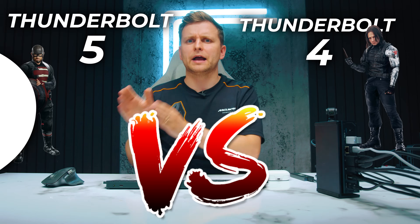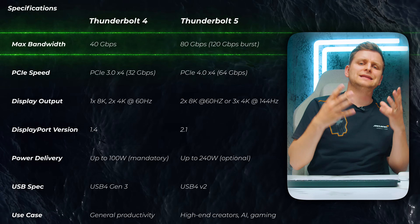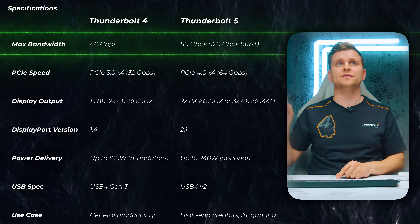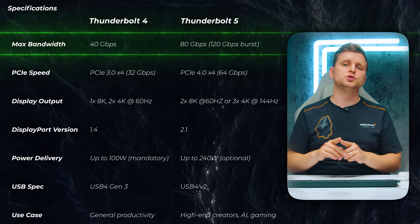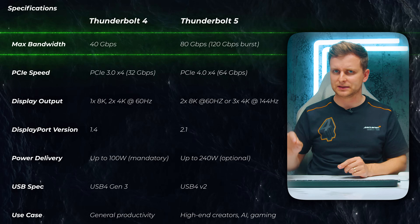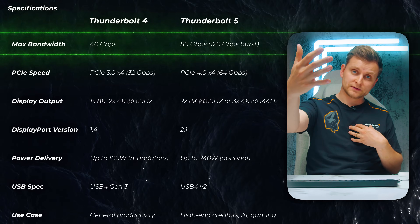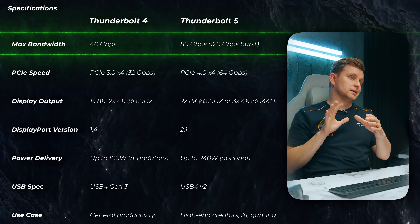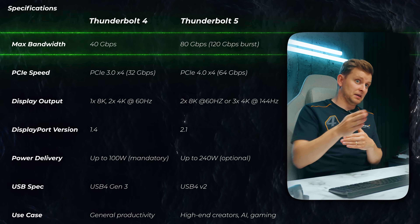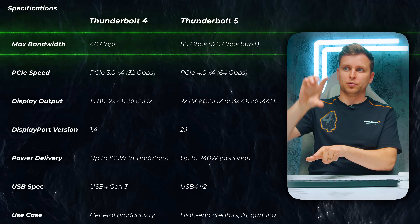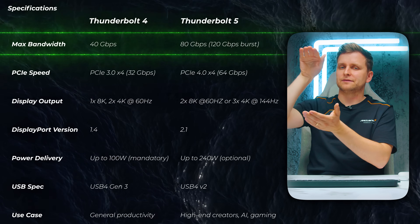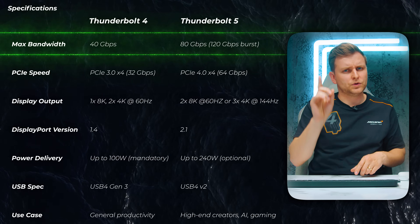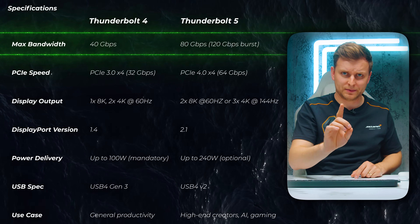Thunderbolt 4 versus Thunderbolt 5 - what's the actual difference? Looking at data bandwidth, Thunderbolt 4 is 40 gigabits per second, but Thunderbolt 5 is 80 gigabits per second and can boost to 120 gigabits per second. If you've got large displays and want to send data out without needing data back, it can redistribute those lanes to push 120 Gbps in one direction - a clever boost bandwidth feature.